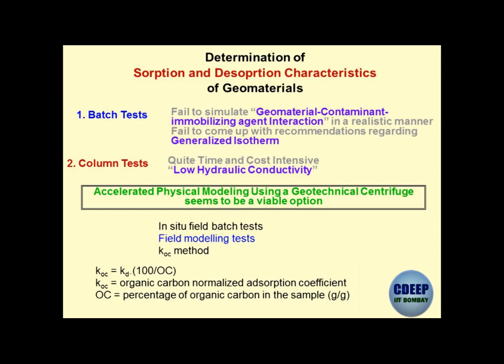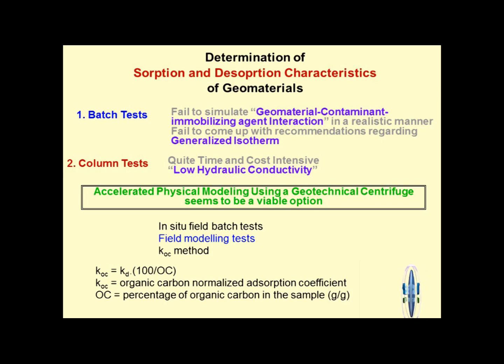Column tests correspond to the real-life situation. Batch tests are not a real similitude between geomaterial-contaminant-immobilization-agent interaction. This was an interesting philosophy on which one of my PhD scholars, Dr. Naidu (now at IIT Chennai), worked for his PhD thesis. Most of these research topics are philosophical — what happens when contaminants interact with soils, geomaterials, immobilizing agents — and what interaction mechanisms are trying to develop.